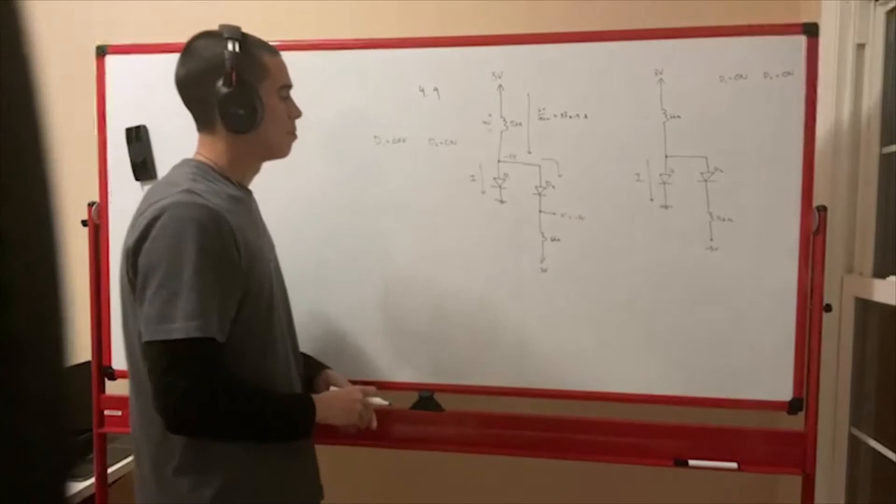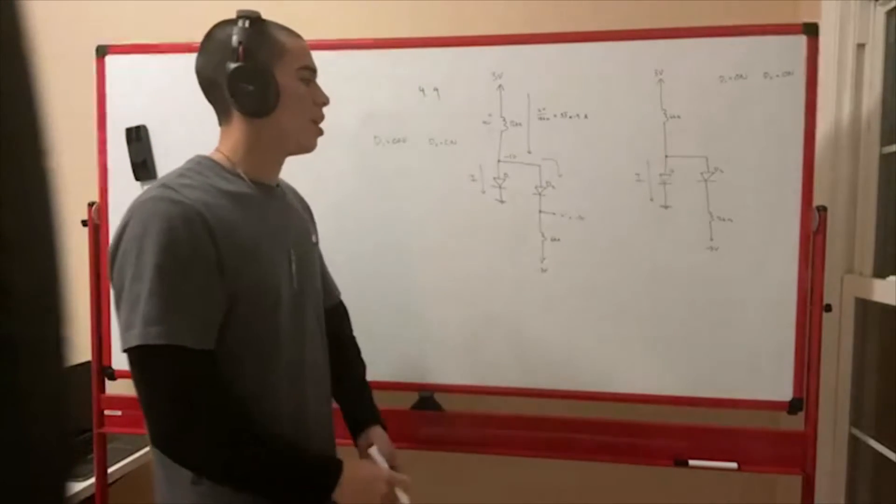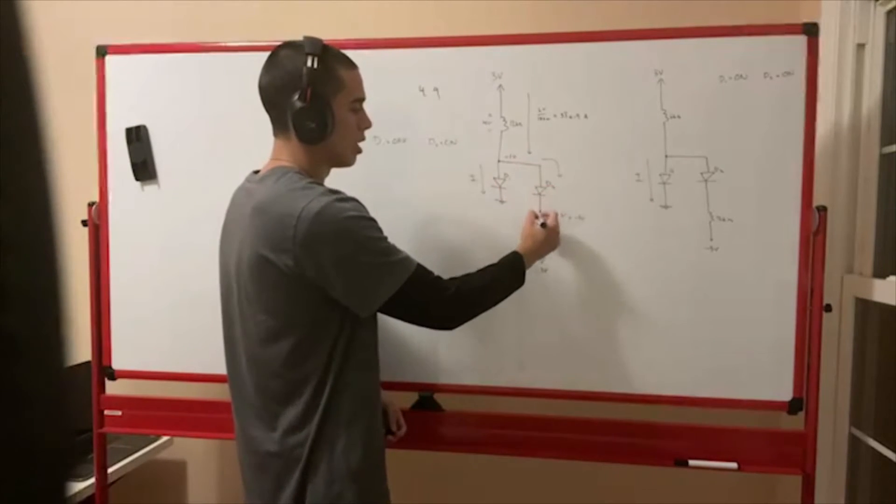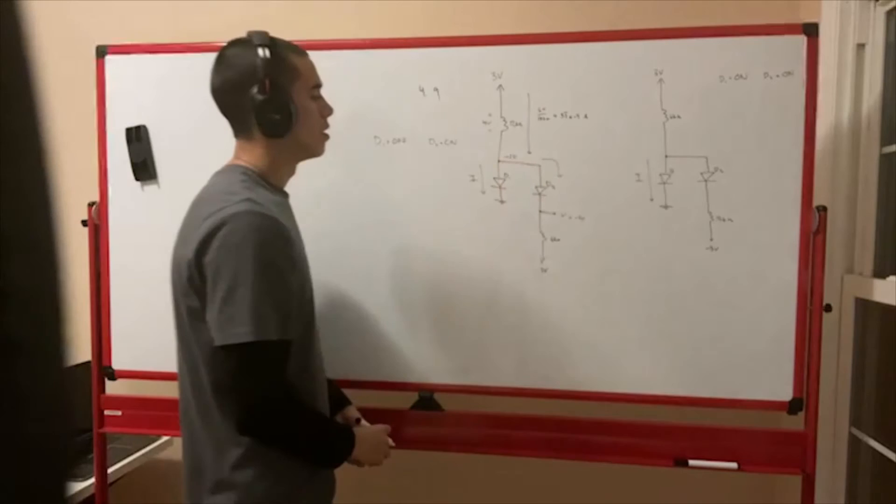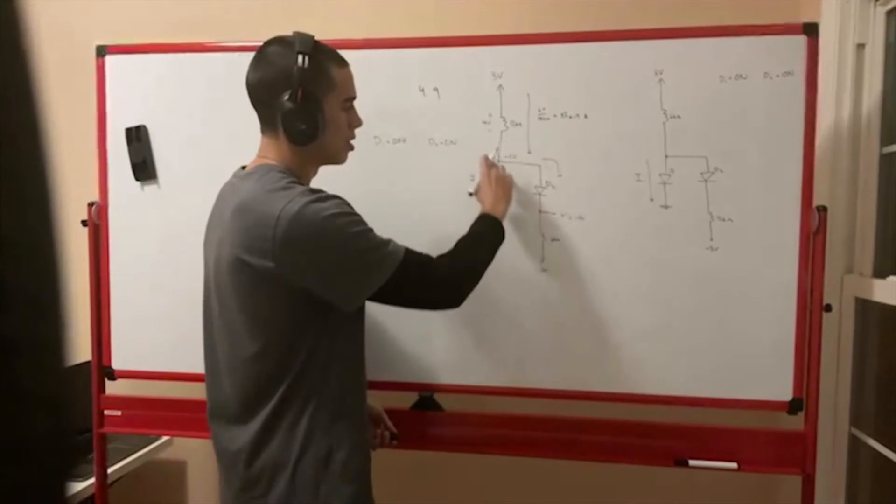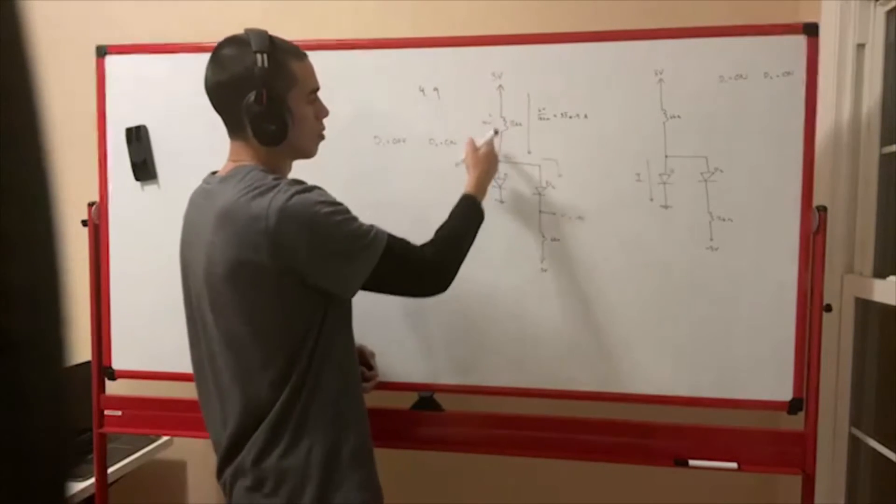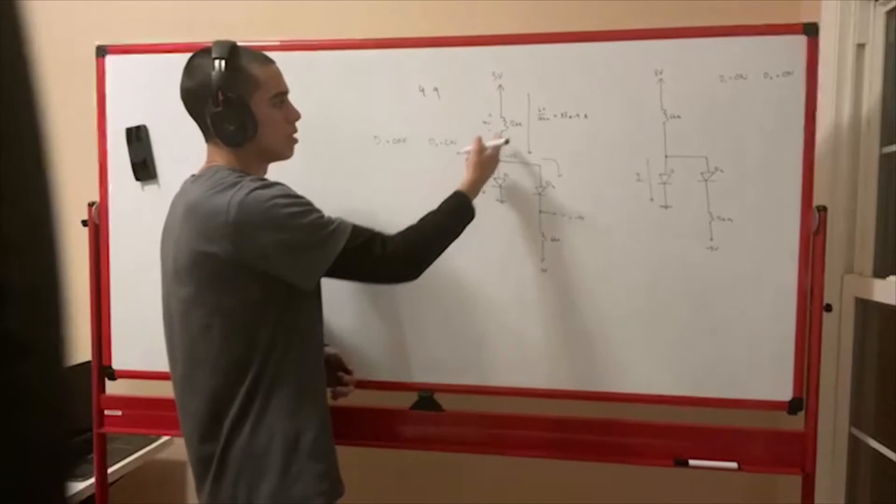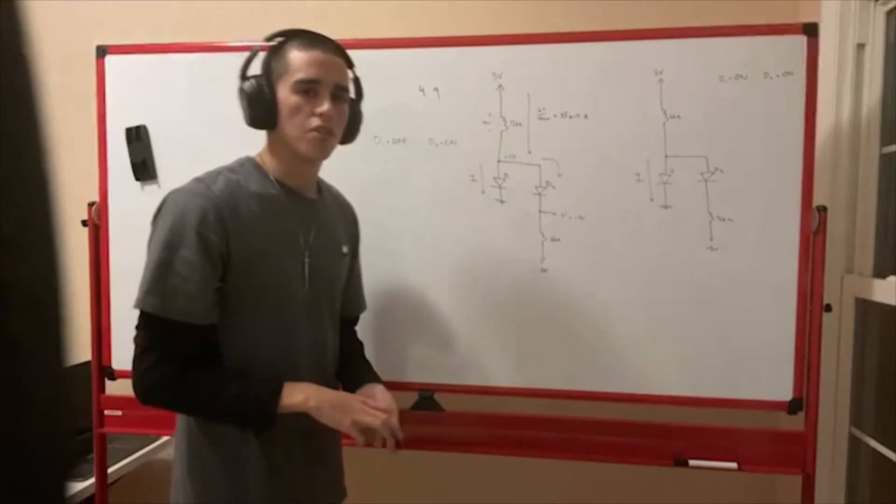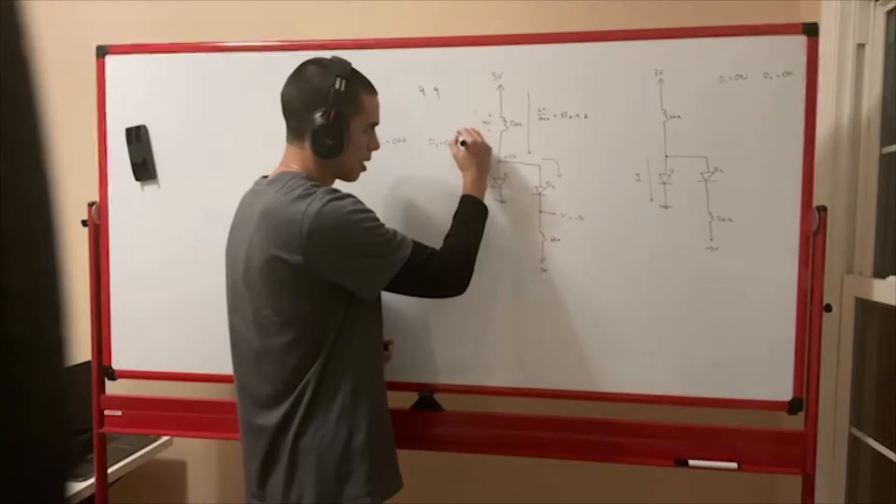If you look at it like, what if we turn D1 on? If you turn D1 on, then this would be a short. So that would make this entire node 0 volts. And if this entire node were 0 volts, then we'd have a different current going through here. That current would be 3 minus 0 divided by 12 kilo ohms, which is 250 micro amps. So you would have a current going here, 250 micro amps.